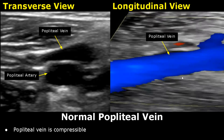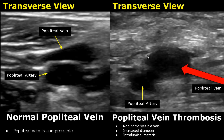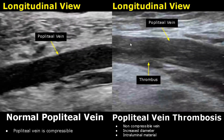Here is an image of the popliteal vein with color Doppler. This is a case of popliteal vein thrombosis. There is a blood clot present in the lumen of the vein. We will be unable to compress the vein with the probe — it is more rounded and has increased diameter. Here is another image of popliteal vein thrombosis in a longitudinal view. The vein will be non-compressible and intraluminal material is present.